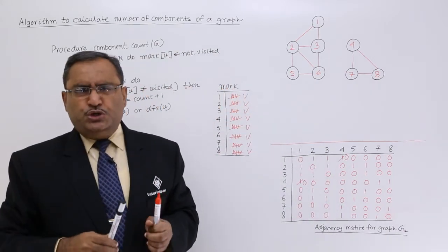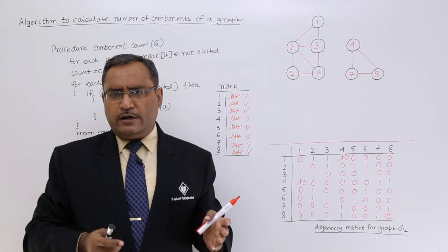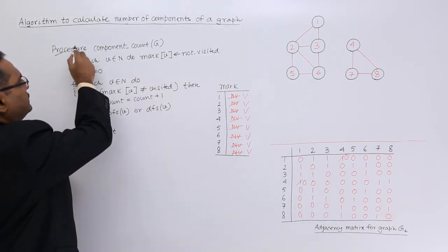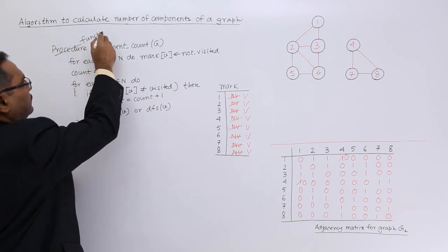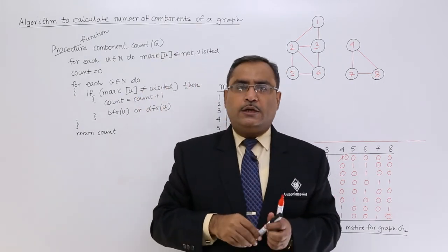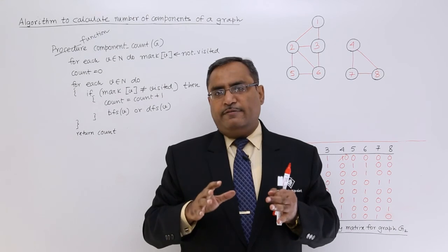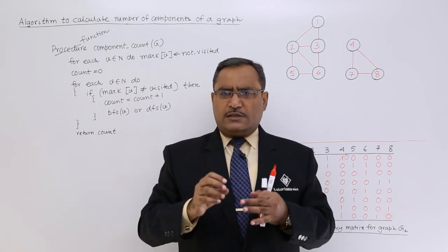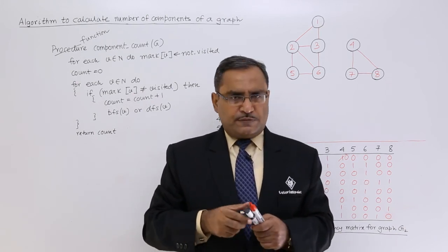In this way we can calculate the number of components of a given graph. Note that in terms of procedure vs. function: a function can return a value while a procedure cannot. So you can replace this as a function if you prefer, or keep it as a procedure — no issues in the algorithm. In this way, the DFS or BFS algorithm can be changed a little bit so that it can also calculate the number of components. Thanks for watching.